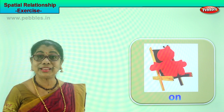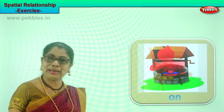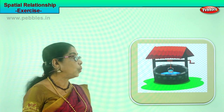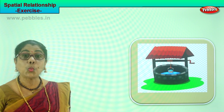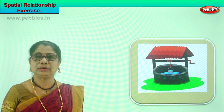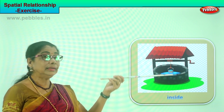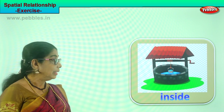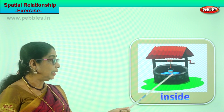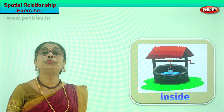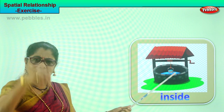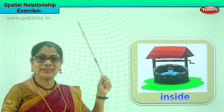On the chair. Let's look at another picture. It's a picture of a well. Tell me, where is the water? There is a bucket of water. The bucket is put inside the well to draw out some water. The bucket is placed inside the well to pull out some water. What must you do with the bucket? Put it inside. The bucket has gone inside.